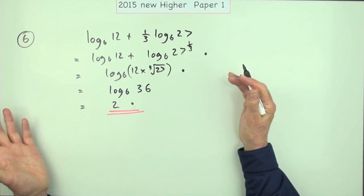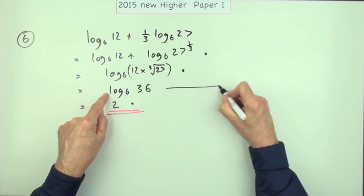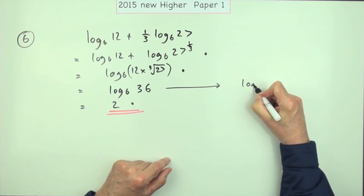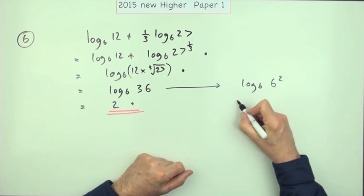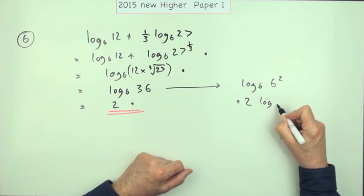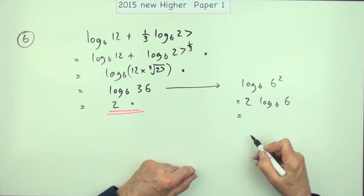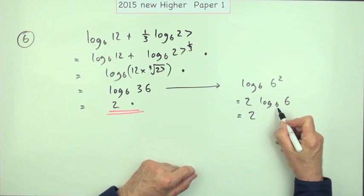to go through that palaver of saying, 'Oh, log base 6 of 36 is log base 6 of 6², which then becomes, taking that out, 2 times log base 6 of 6,' and then saying, 'Oh, log base 6 of 6...